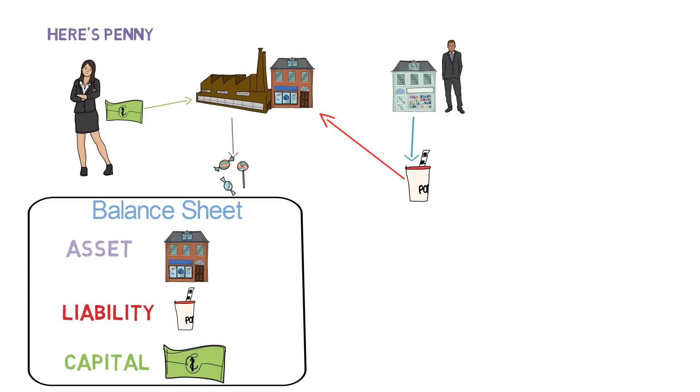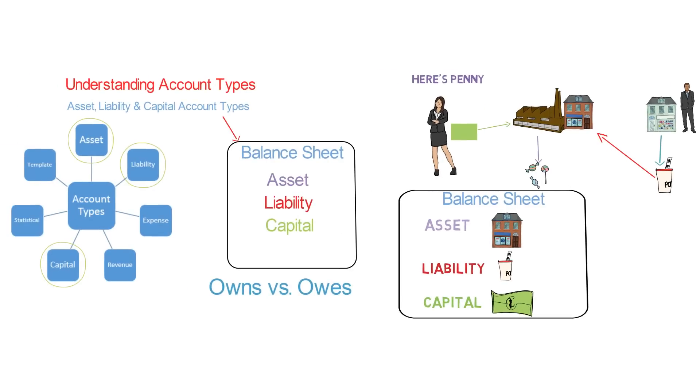If you think about your own business — what you own, what you owe, and what has been invested — you can easily identify these account types in your general ledger.